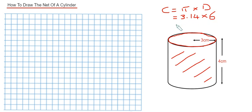That will give me 18.8 centimeters rounded to one decimal place. So let's draw a rectangle then. We've got a width of 4 and then we've got to go to a length of 18.8. So 1, 2, 3, 4, 5, 6, 7, 8, 9, 10, 11, 12, 13, 14, 15, 16, 17, 18 and a little bit.